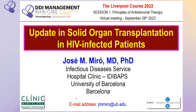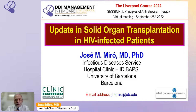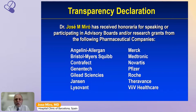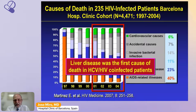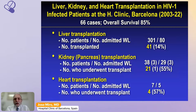Thanks to the organizing committee for inviting me to give this talk on Solid Organ Transplantation in HIV-Infected Patients. I am Jose Maria Miró, working at the Hospital Clinic of Barcelona. In the first decade of this century, liver diseases were the first cause of death in the co-infected population, so liver transplantation was the only option. In 2001, we started the solid organ transplantation program at the Hospital Clinic, and over 20 years we have performed 41 liver transplants, 21 kidney transplants, and 4 heart transplants, with an overall survival after a median follow-up of 10 years of 85%.